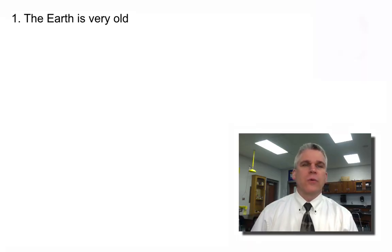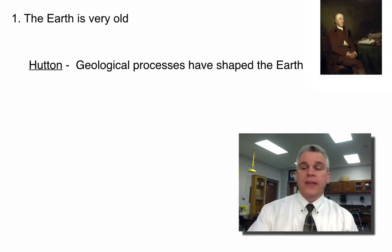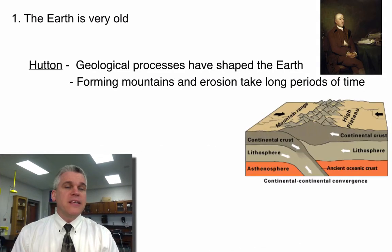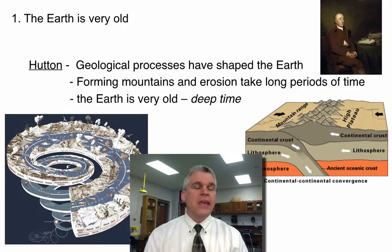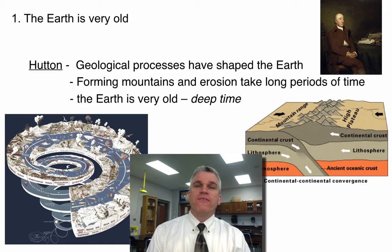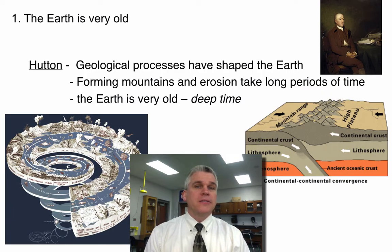First of all, he was reading the works of Charles Hutton. And Charles Hutton said that geologic processes have shaped the Earth to the way that it is today. But he said things like making mountains and then eroding them away takes a lot of time. In order for us to have these huge mountain ranges, the Earth has to be very old. He came up with what he called deep time. Up until this point, it was pretty well thought that the Earth was only 6,000 years old, but Hutton suggested that it's probably much older than that.